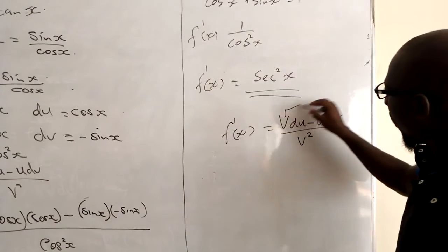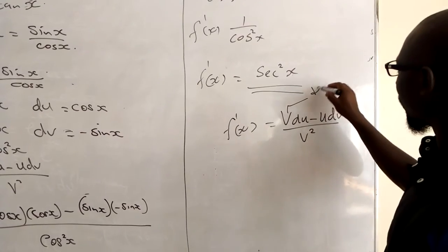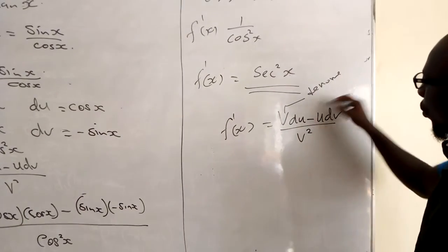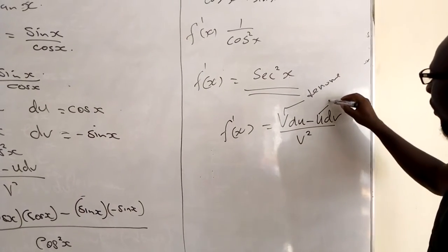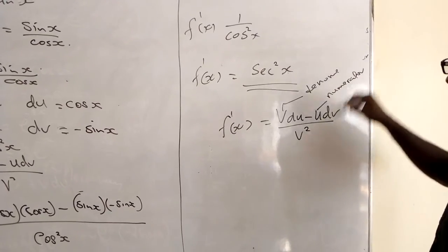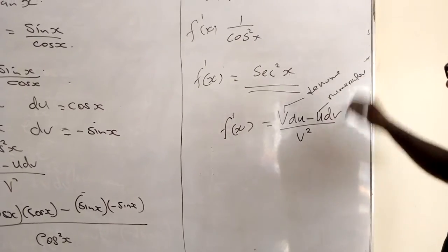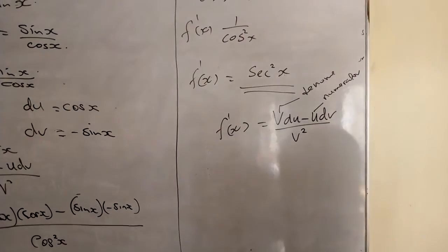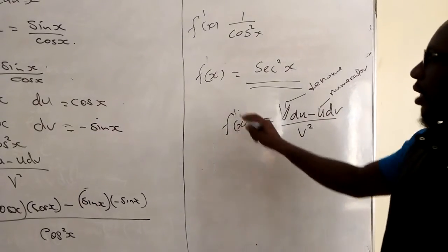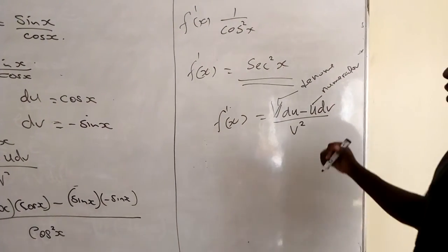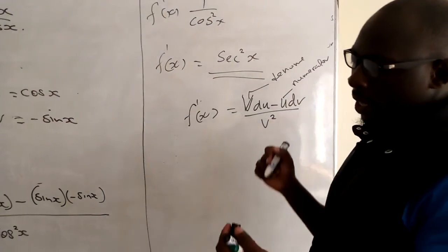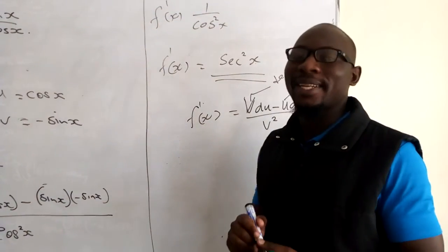Where v is the denominator and u is the numerator of the function. The denominator and numerator defined that way give you the derivative of f of x using the quotient rule. This is all for now. Thank you.